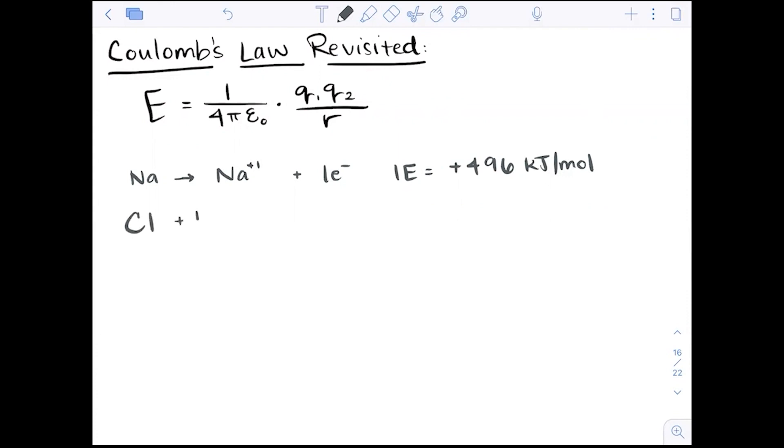For chlorine to gain that one electron and become chlorine minus one, that is electron affinity. That releases 349 kilojoules per mole. So overall, if I were just to add those two together, I would see that to make sodium chloride, it would be overall positive in energy, meaning that it costs us. That is an endothermic reaction.